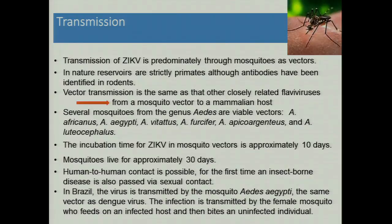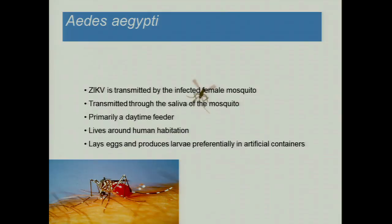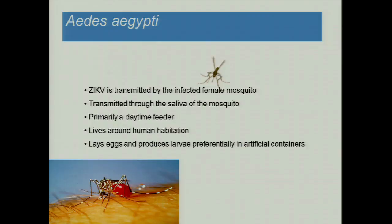The distinguishing factor about Zika virus is that human-to-human infection is possible — the first time that's ever been described with an insect-borne disease. In Brazil, it's transmitted by Aedes aegypti, the same mosquito that transmits dengue and yellow fever in the Amazon basin; it's transmitted by the female mosquito. It's primarily a daytime feeder, different from the malaria mosquito which bites at dusk and dawn. If you've been to Rio, you know they bite at night too if you don't have air conditioning on.